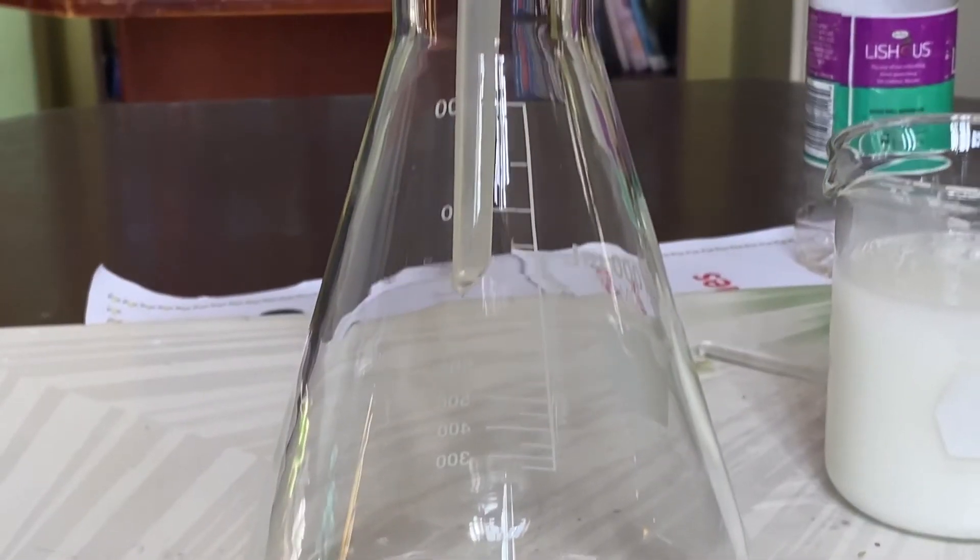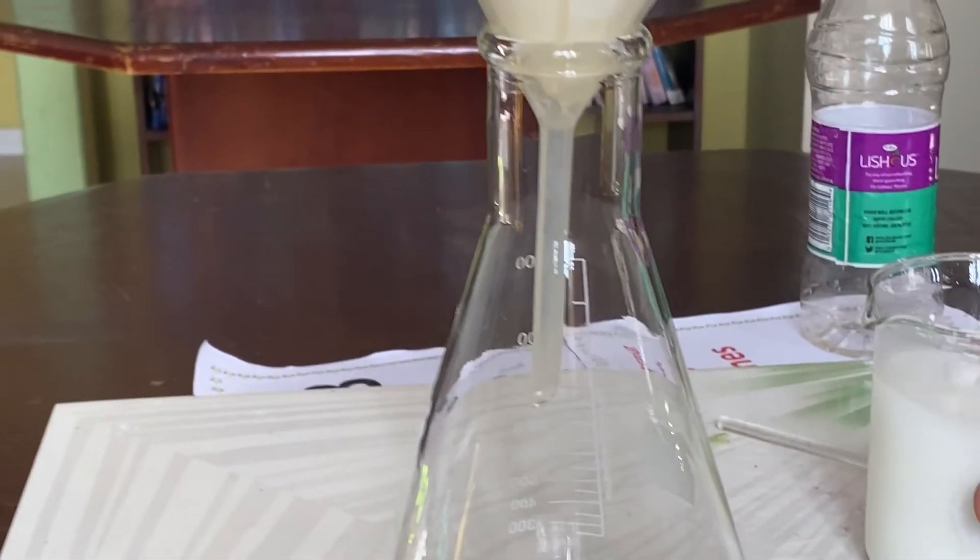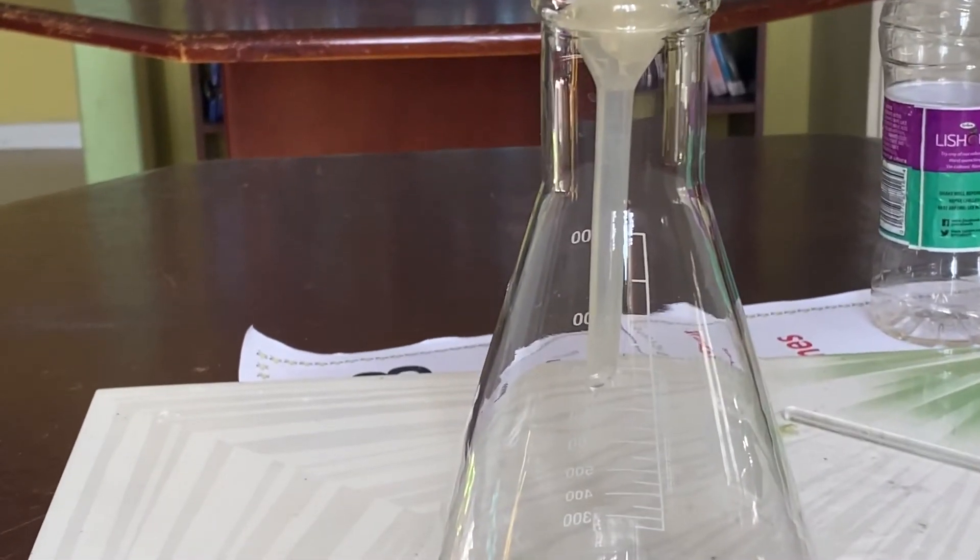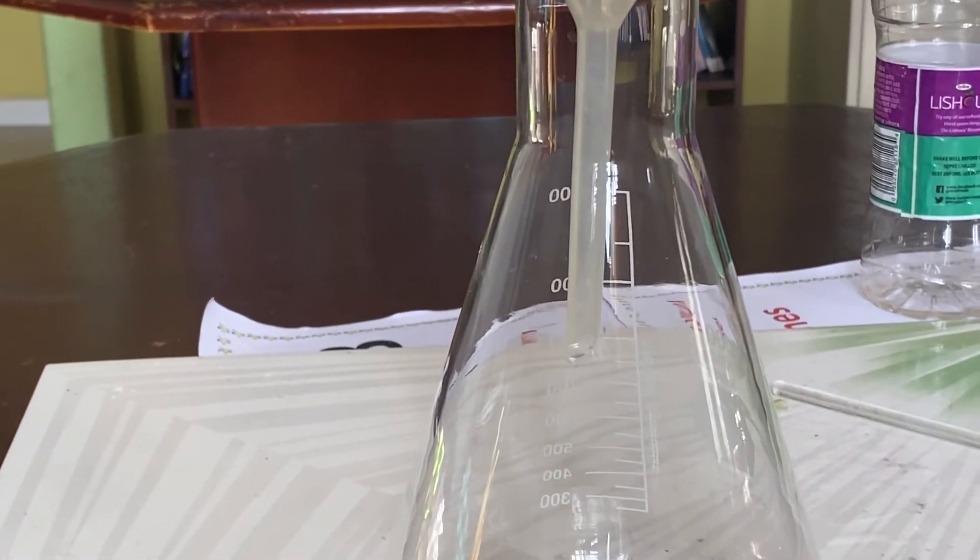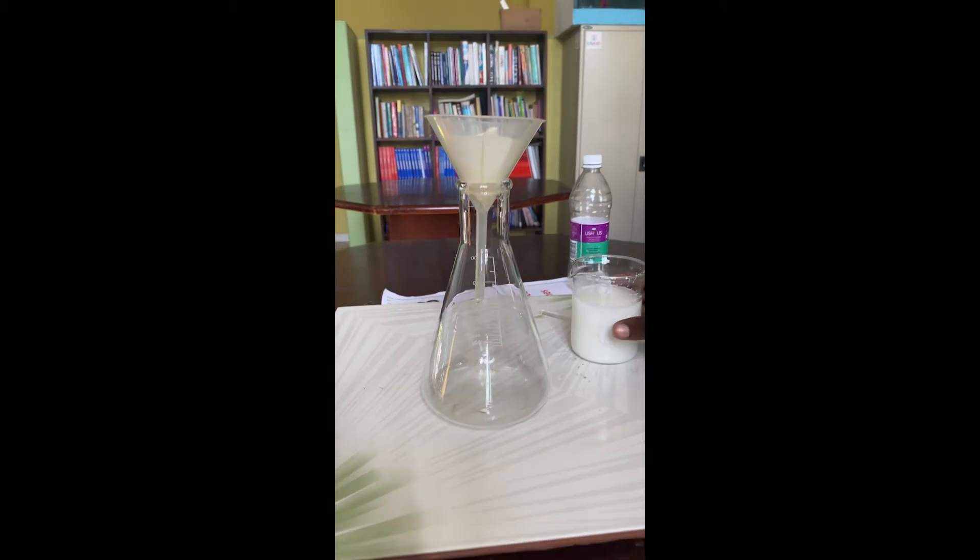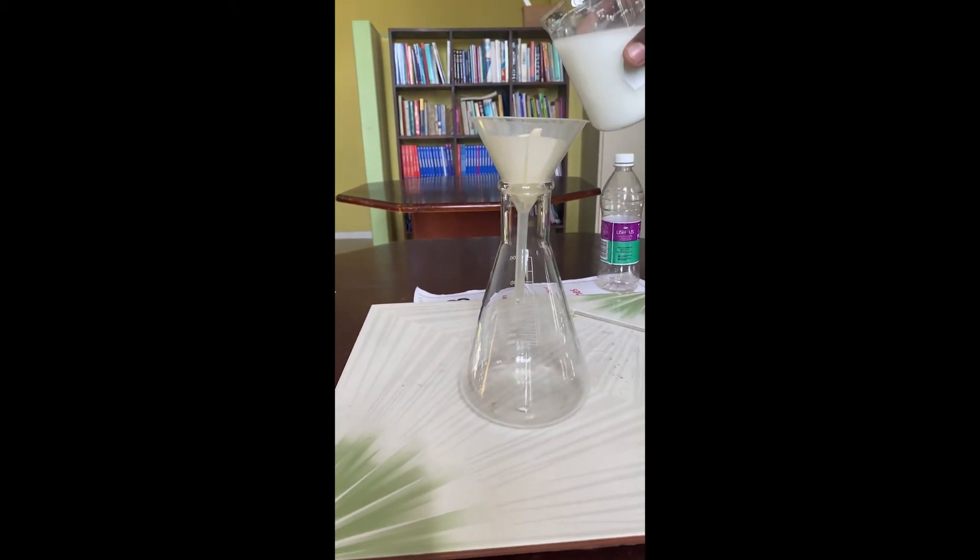To start the experiment, we place the filter funnel into the beaker and place the filter paper into the funnel. We then pour the starch mixture into the funnel and wait until the separation takes place.